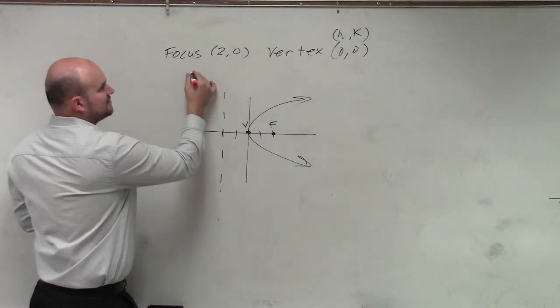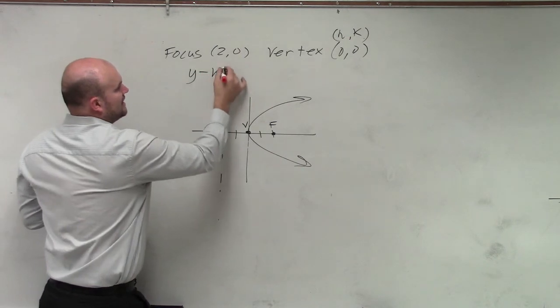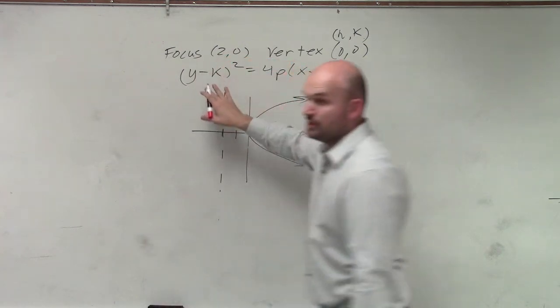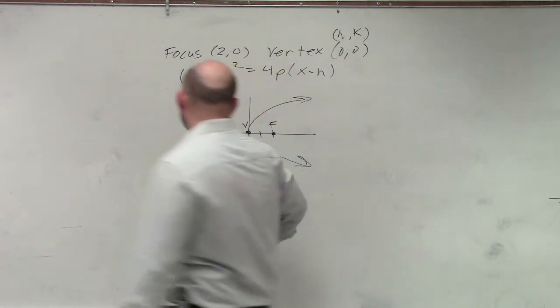So this one's going to be (y - k)² = 4p(x - h). We know h and k are 0, 0.